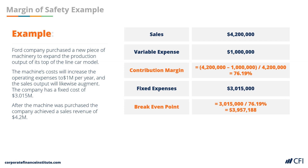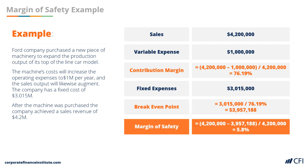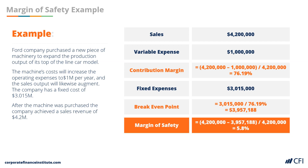Finally, to calculate the margin of safety, we take sales, subtract the breakeven point, and divide by sales again to reach a margin of safety of 5.8%.